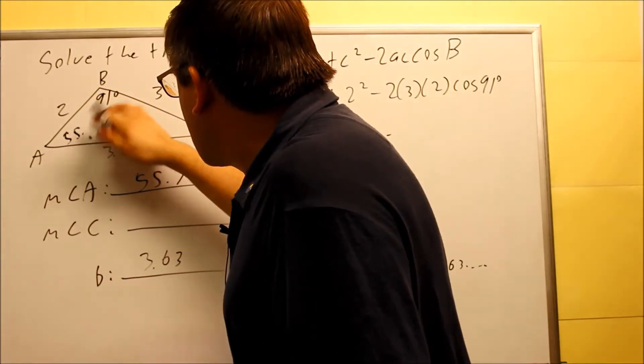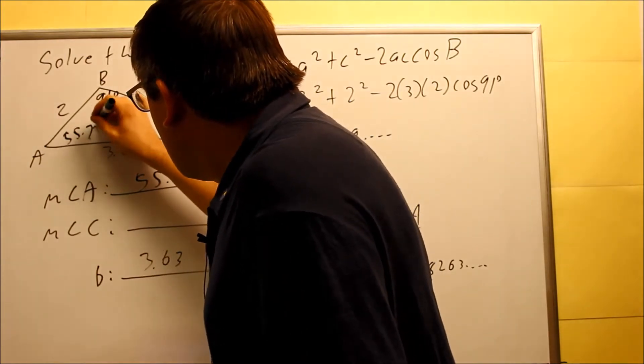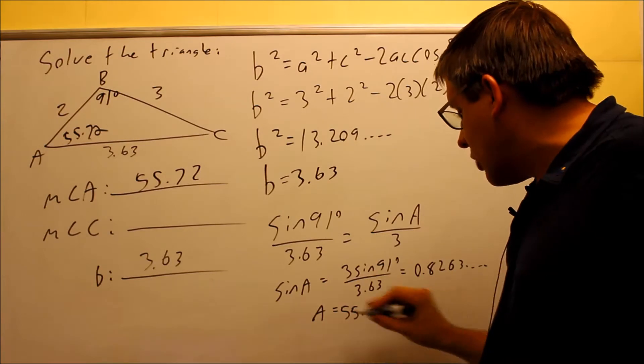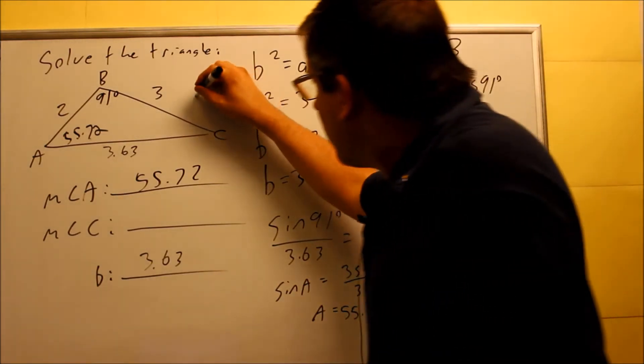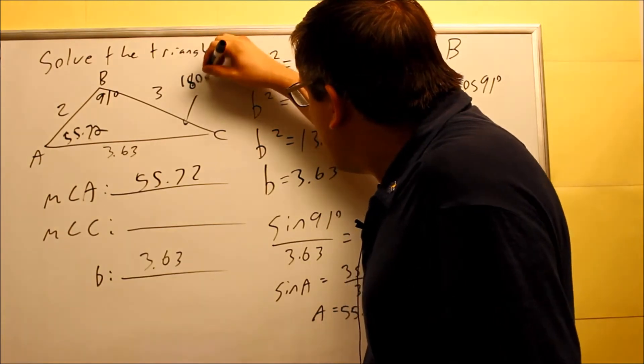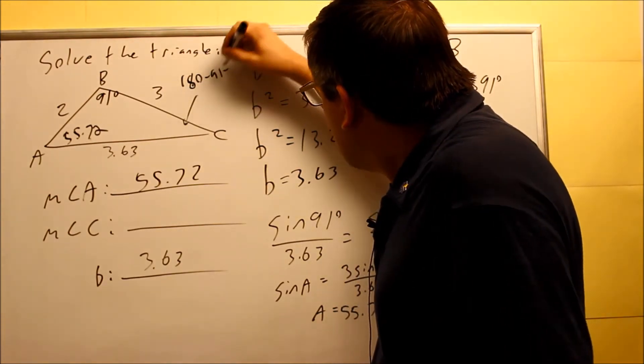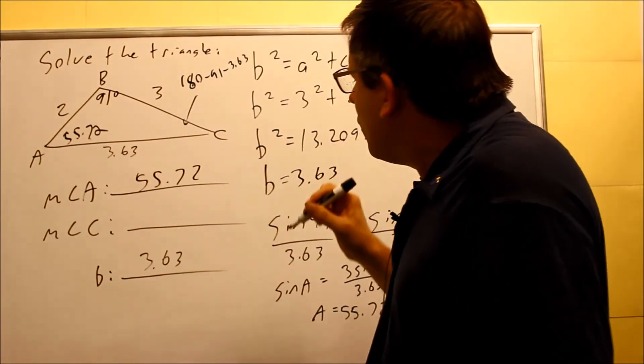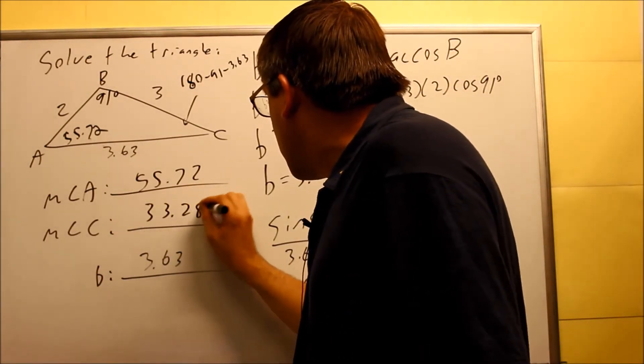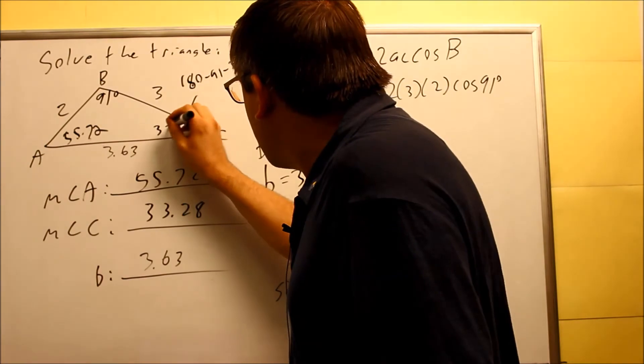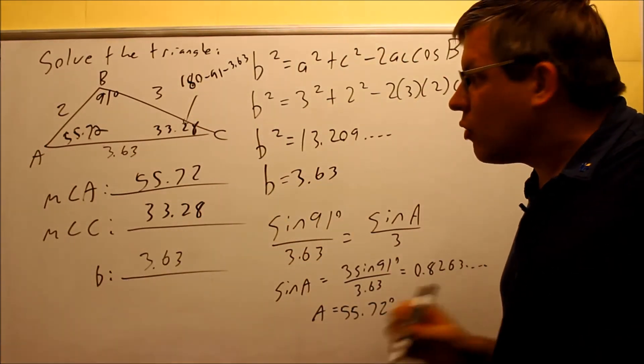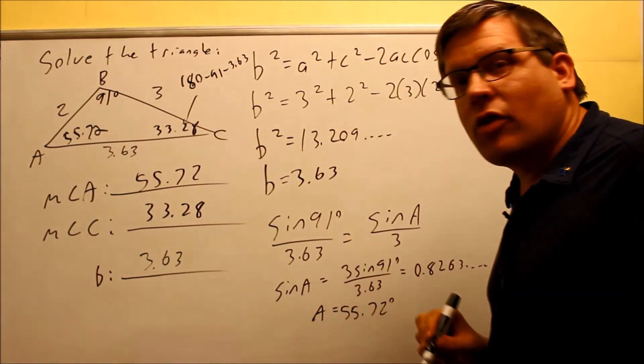So once we have this one, then we're going to have to go for the last angle which is going to be C. So since we already have this one, now for that one right here for C, you just subtract these other angles from 180. 180 minus 91 minus 55.72. And if you do all that, the answer you're going to get here is 33.28. So this is 33.28. That does solve our triangle. We have all three sides and we have all three angles.